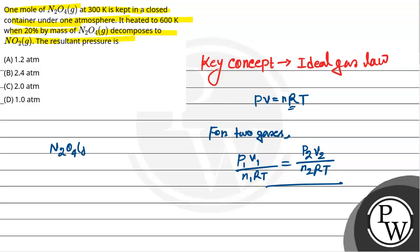N2O4 dissociates to 2NO2. Suppose it is 1 unit initially, so it is 0 dissociated. Now at equilibrium, 20% mass N2O4 dissociates. So this means how much mass is 1 minus 1 into 20%.